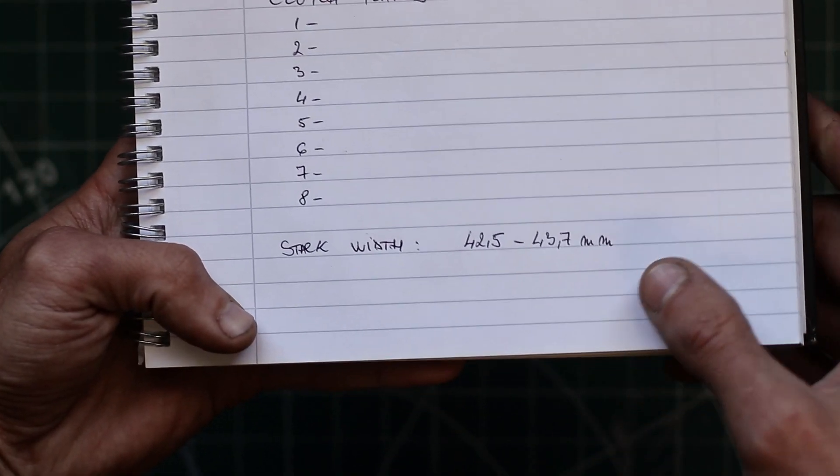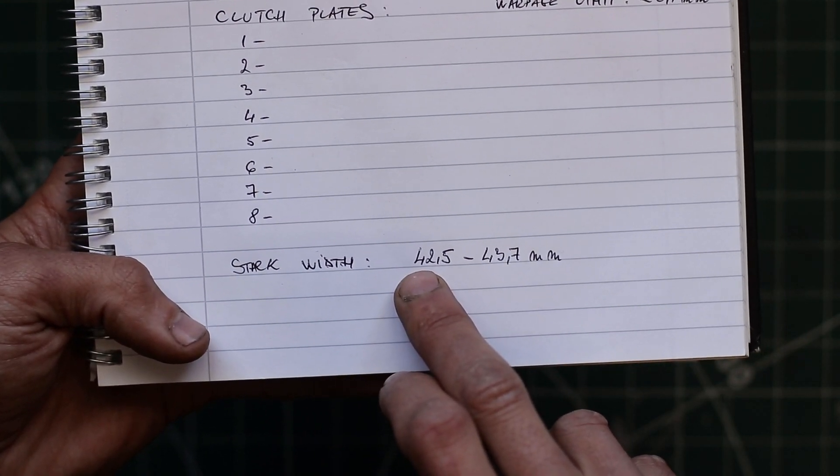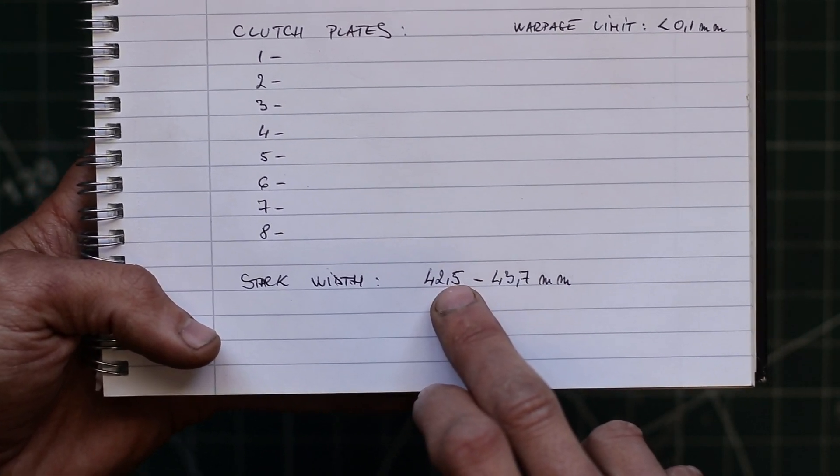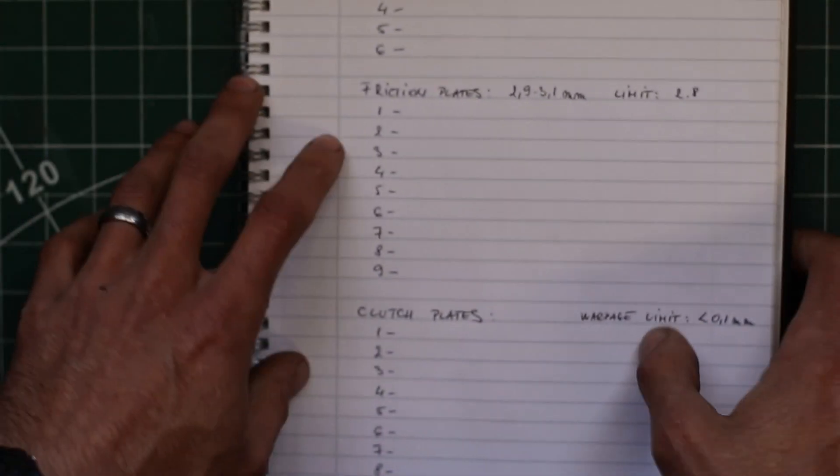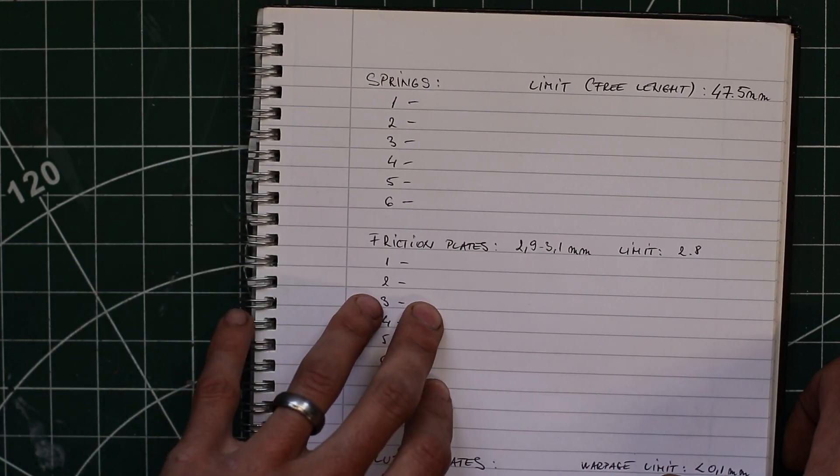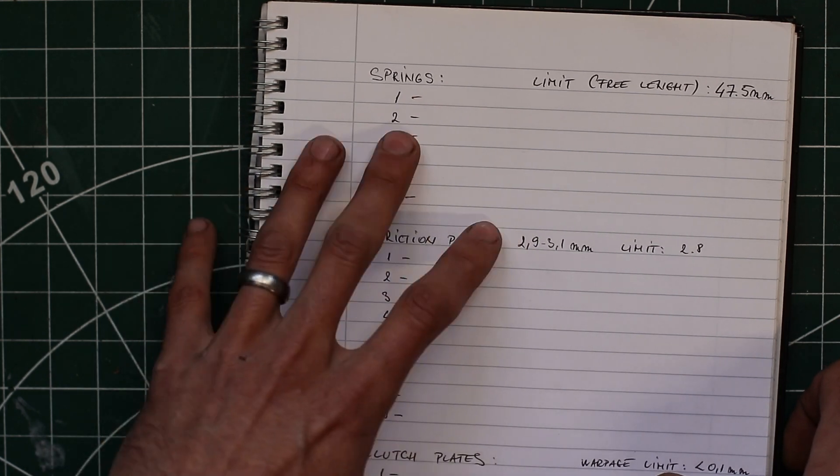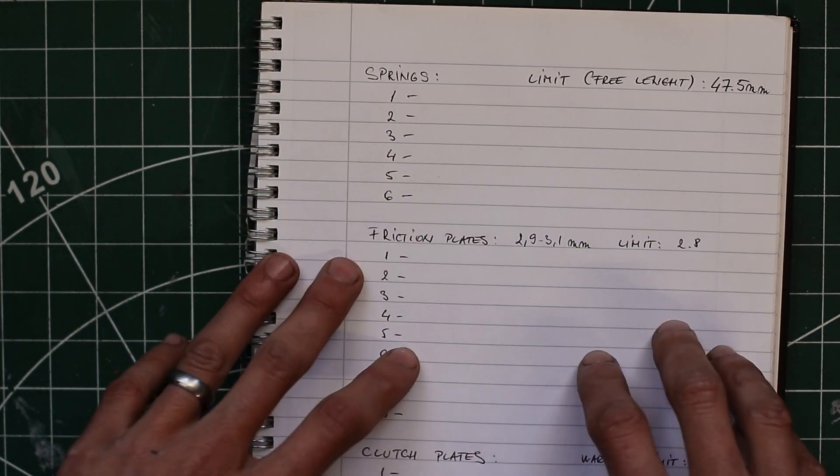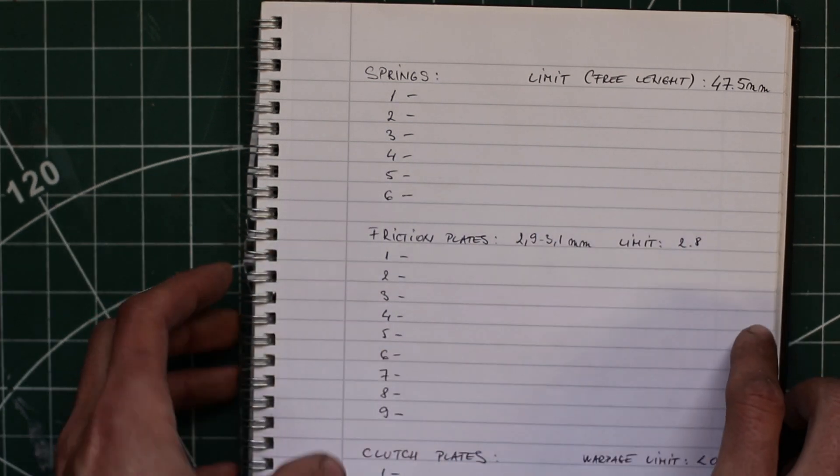The clutch stack width has to be between 42.5 and 43.7 millimeters. So we're going to go ahead, take the measurements and write all the numbers down, and then we're going to have a look at all the numbers and decide what to do next. Let's jump into measuring.